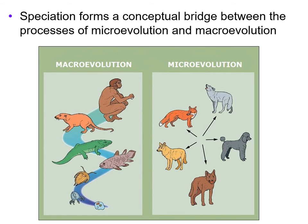This concept of divergence, this concept of speciation, is going to form a conceptual bridge between the processes of micro evolution and macro evolution. If you can see how that one cell can split and diverge and create a different type of cell with different alleles, then you can understand both macro and micro evolution.